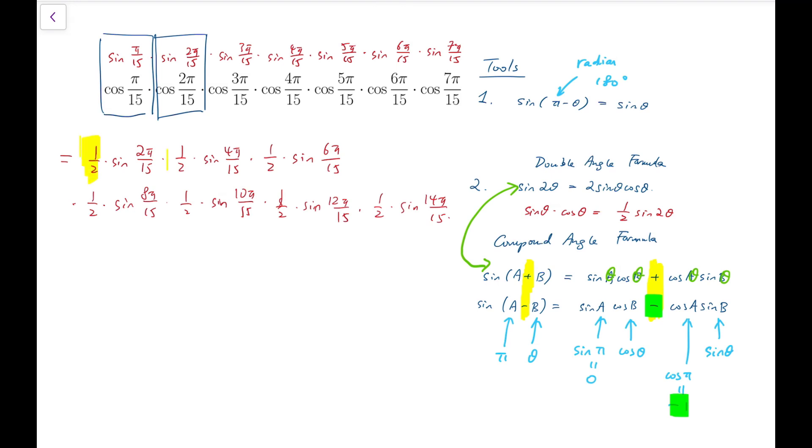All the halves multiplied together, there are 7 of them, gives 1 over 128. So we regroup the terms, and this is what we are going to get. By the double angle formula, we have reached this expression.